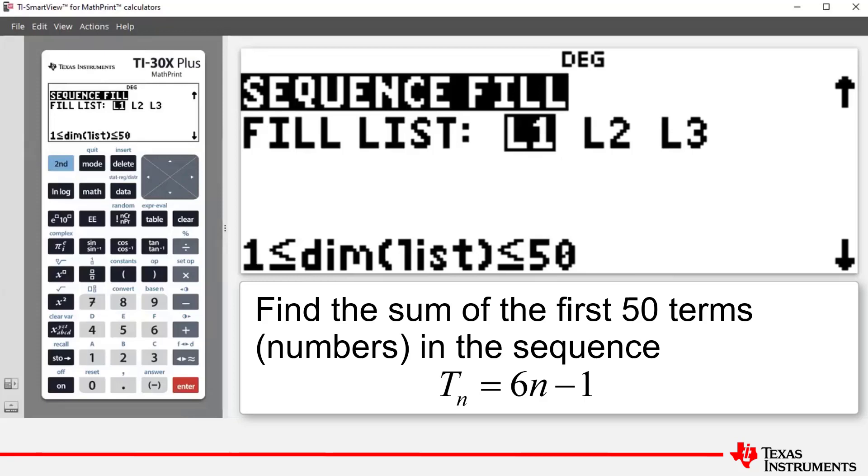And we want to fill list L1 so that's highlighted and down the bottom of the screen there that's saying that we can have a list consisting of 50 numbers.